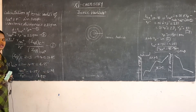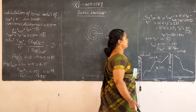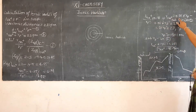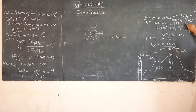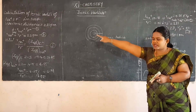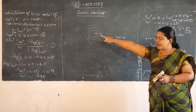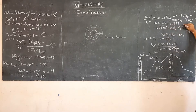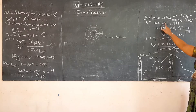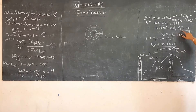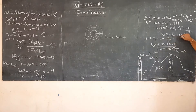Substituting into the equation: r_Na+ divided by r_F- = 4.85 divided by 6.85 = 0.71. Cross-multiplying and using the second equation r_Na+ + r_F- = 231, we get 1.71 × r_F- = 231. Therefore r_F- = 231 divided by 1.71 = 135.1 picometers.